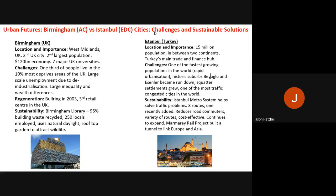Istanbul's solutions include the sustainable regeneration of Beyoğlu and Esenler over the past 20 years, which now house mainly young professionals. The Istanbul metro system has helped solve traffic problems, currently with eight routes, reducing road commuters, offering a variety of routes, being cost-effective and continuing to expand. These are examples of sustainability and challenge management in Istanbul, contrasting with Birmingham as an EDC versus an AC city.